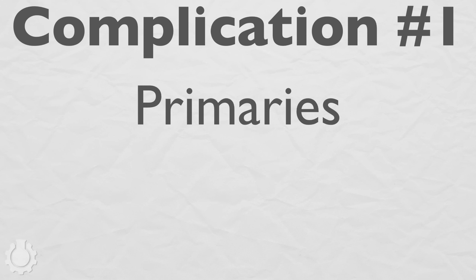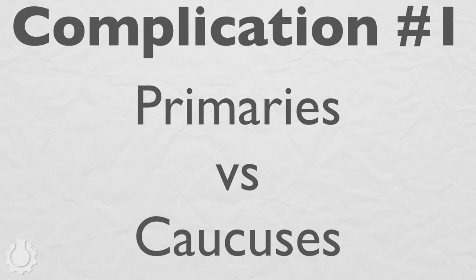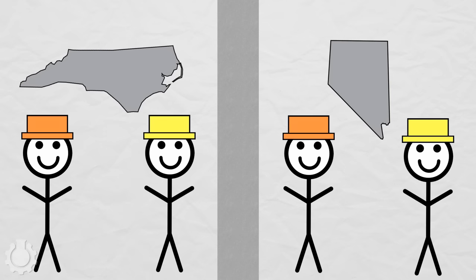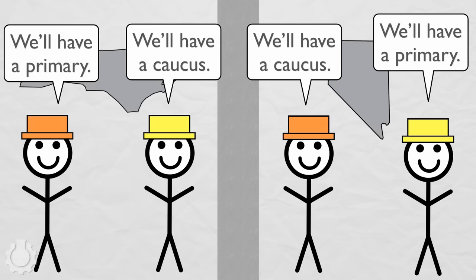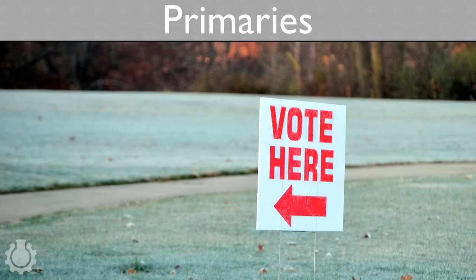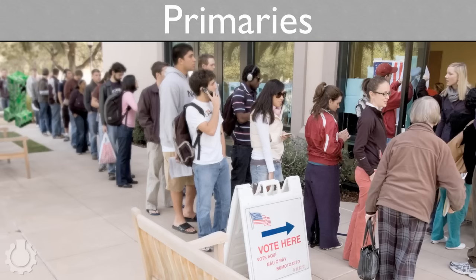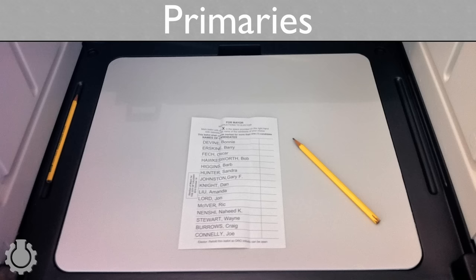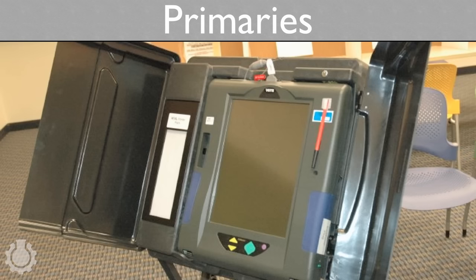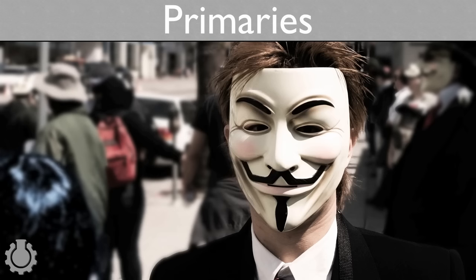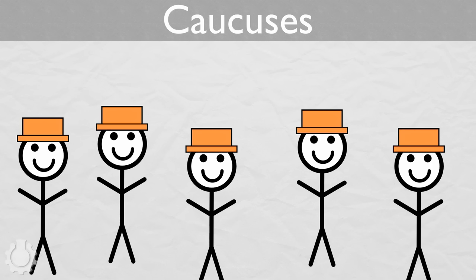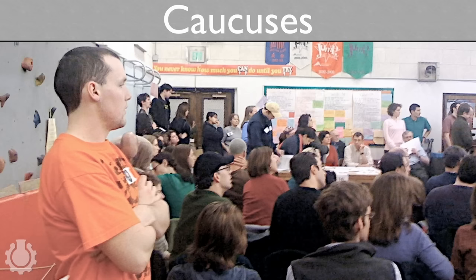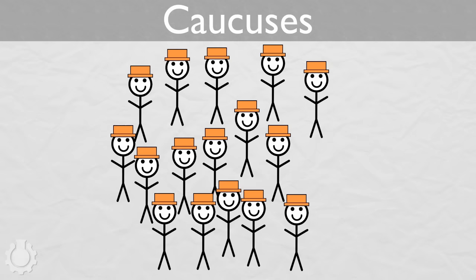Complication number one: primaries versus caucuses. In every state, the local party leaders decide how to run their elections. The two most common choices are primaries and caucuses. Primaries are just like standard elections — go to the polls whenever you can, stand in a long line, hide in a booth, then tick a box or press a button, and your vote is cast in complete anonymity. A caucus, however, is a public vote. People gather in groups wherever space is available.